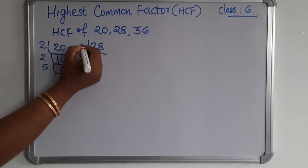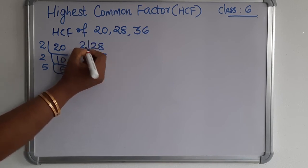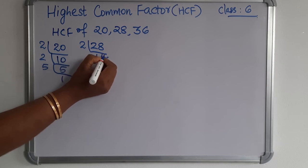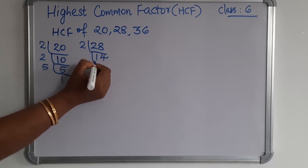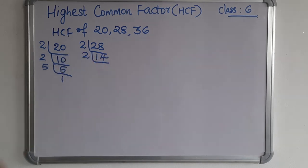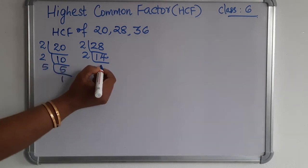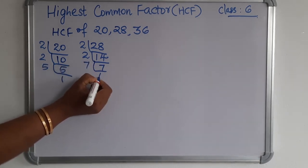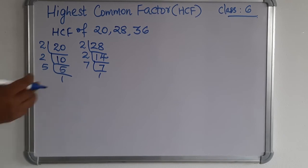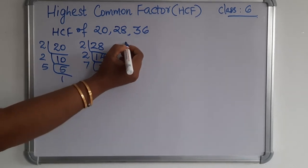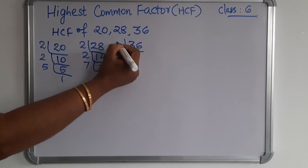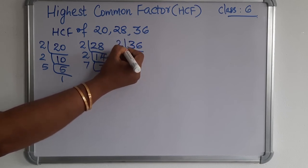Then twenty-eight — twenty-eight is also an even number. So we can start with two. How many times? Fourteen times. Then again it is an even number, so we can take two. Two sevens are fourteen. Again seven, then one. At last you will get a one — up to that you want to do the prime factorization.